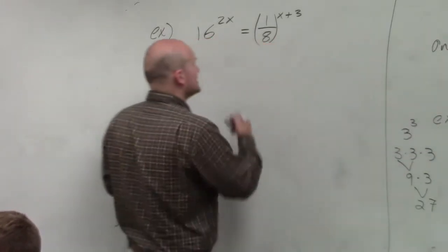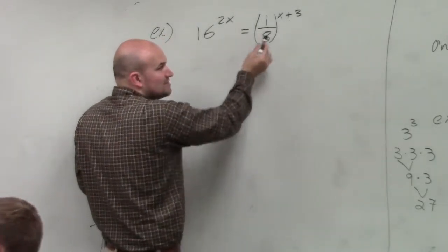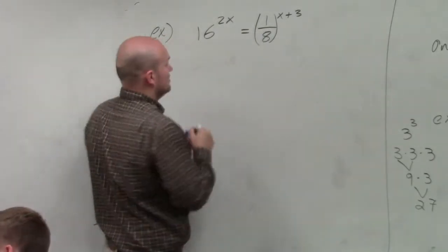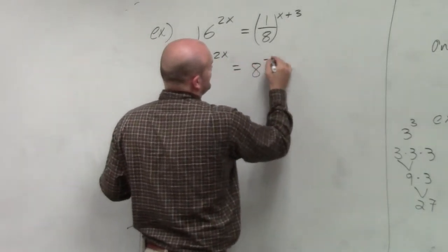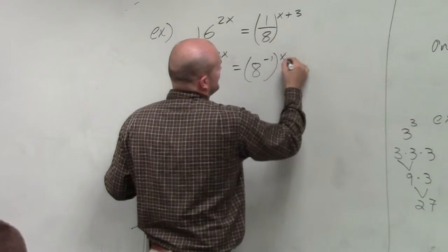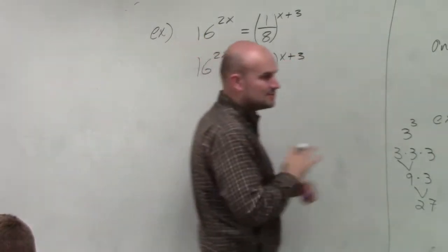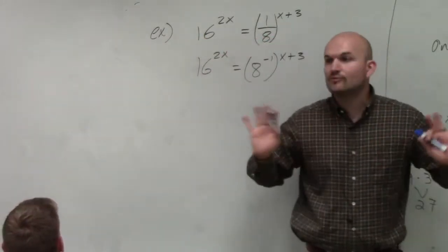But the main important thing I want you guys to understand is we can rewrite. First of all, let's get rid of fractions. So the first thing is 8 to the negative first raised to the x plus 3. So the first thing I always want to do is get rid of fractions.